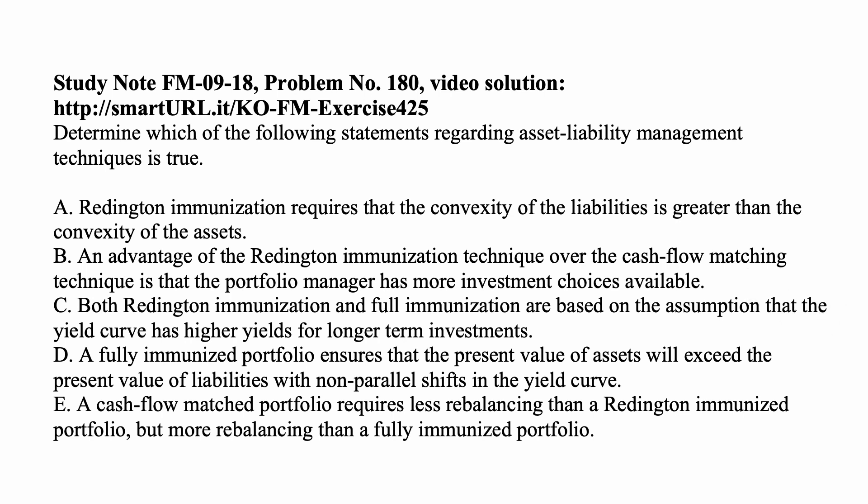Here's the problem for today for exam FM. Determine which of the following statements regarding asset liability management techniques is true. A: Redington immunization requires that the convexity of the liabilities is greater than the convexity of the assets. B: An advantage of the Redington immunization technique over the cash flow matching technique is that the portfolio manager has more investment choices available. C: Both Redington immunization and full immunization are based on the assumption that the yield curve has higher yields for longer-term investments.